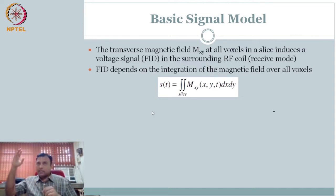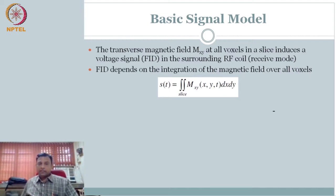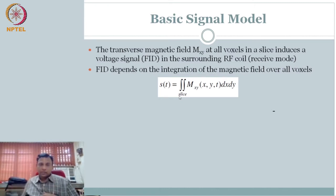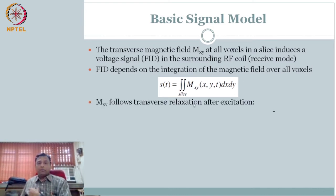What we know from before is the signal comes from the transverse component m_xy. When this transverse component spins, you have a coil and you get the free induction decay voltage signal. Our signal s(t) is coming from m_xy(t) from the whole slice — the whole slice is contributing, whichever region got excited. So s(t) is a net sum from this whole slice of the m_xy component from different locations.